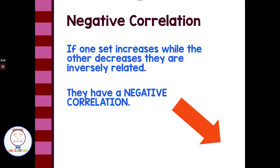A negative correlation would be if one set increased while another decreases — they're inversely related. We would call that a negative correlation. Like a negative slope, you're looking at points where the flow is going downward from left to right, with one variable increasing and another variable decreasing.